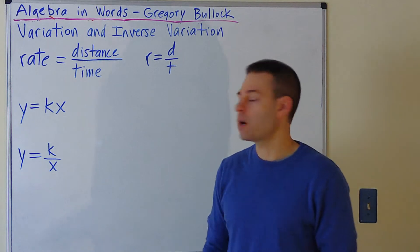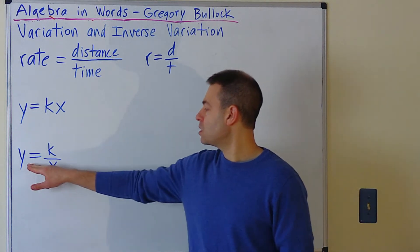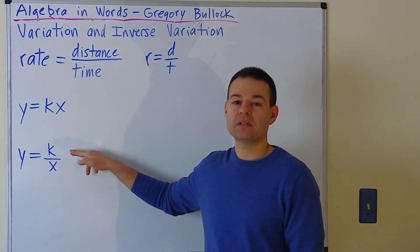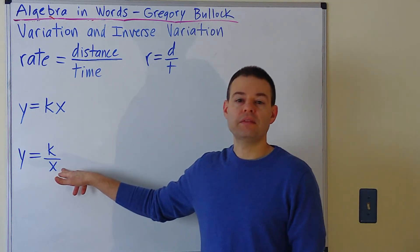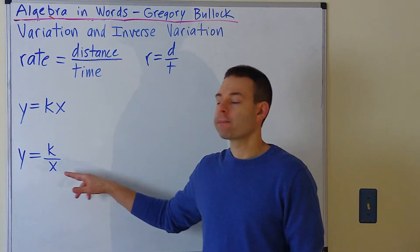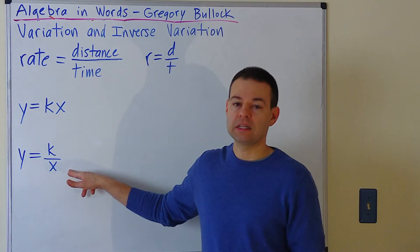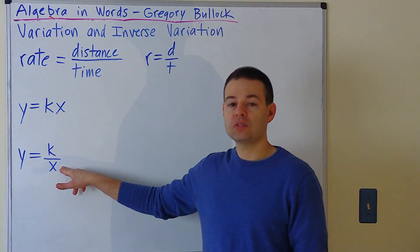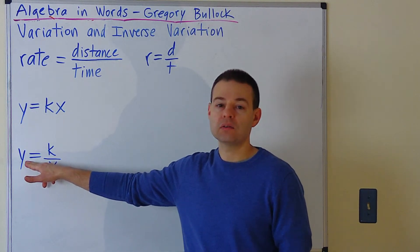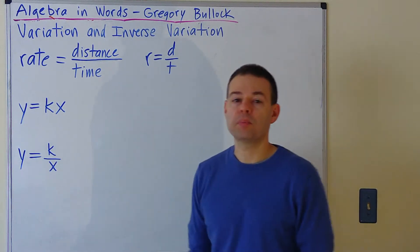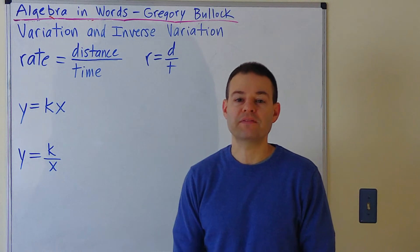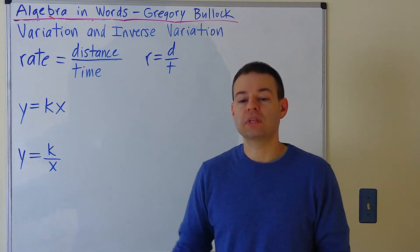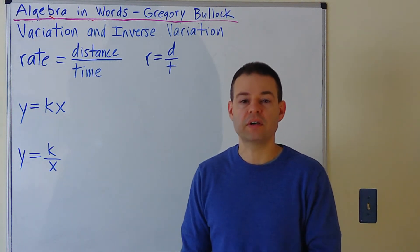Now let's look at this case: Y equals K over X. Here the proportionality constant is in the numerator and the variable X is in the denominator. This represents inverse proportionality — as X goes up, Y goes down, and as X goes down, the value of Y goes up. K is still the proportionality constant; it keeps the balance from the left side to the right side.